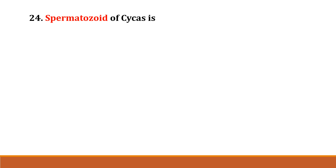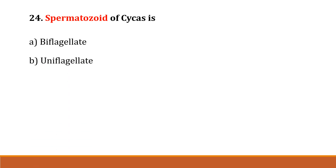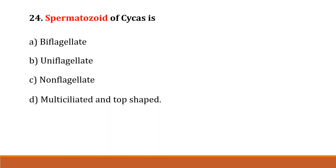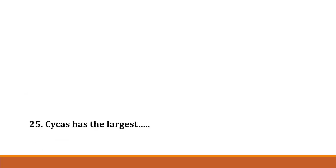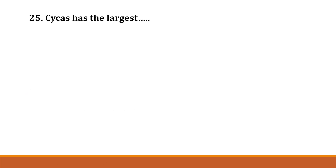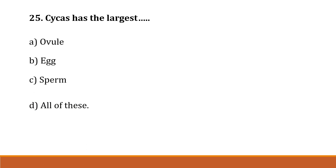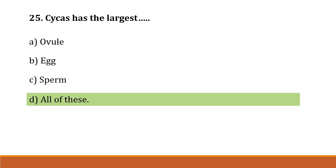Question number 24: The spermatoid of Cycas is Option A: biflagellate, Option B: uniflagellate, Option C: non-flagellate, Option D: multiciliated and top-shaped. The correct answer is Option D, multiciliated and top-shaped. Question number 25: Cycas has the largest Option A: ovule, Option B: egg, Option C: sperm, Option D: all of these. The correct answer is Option D, all of these.